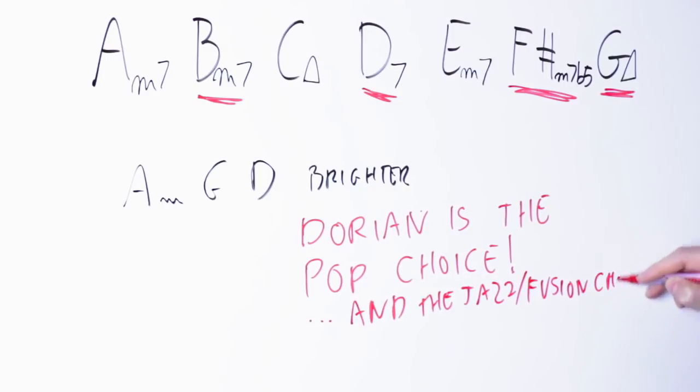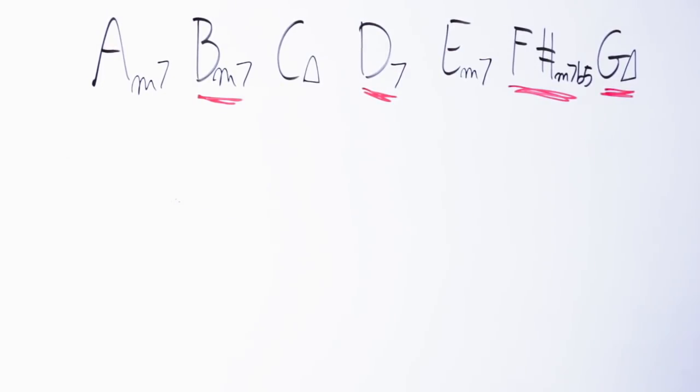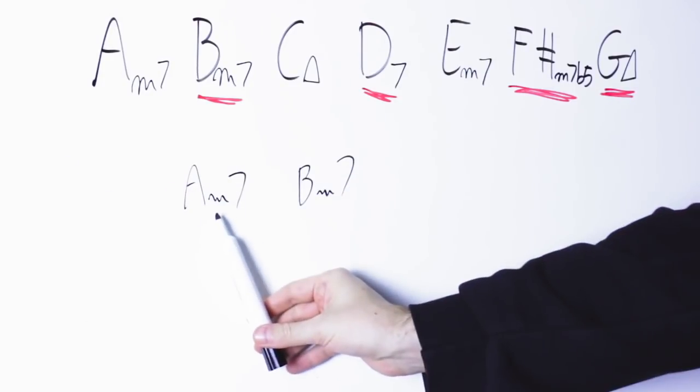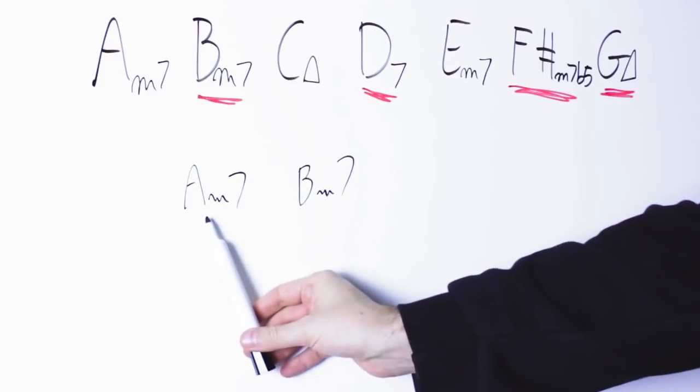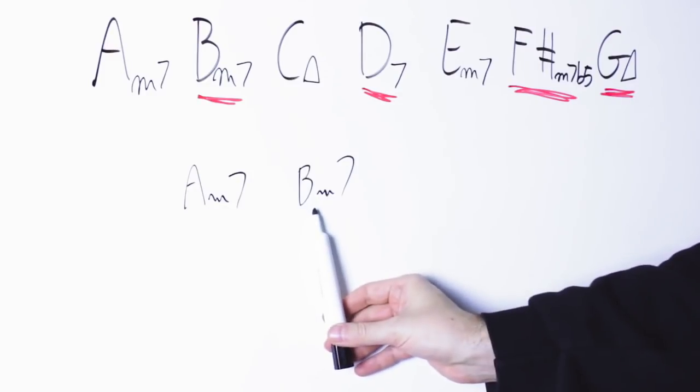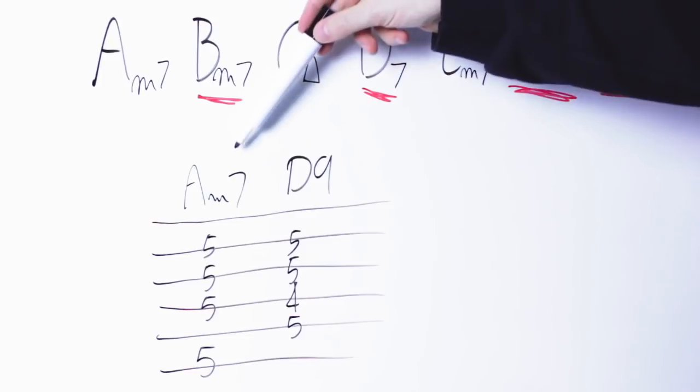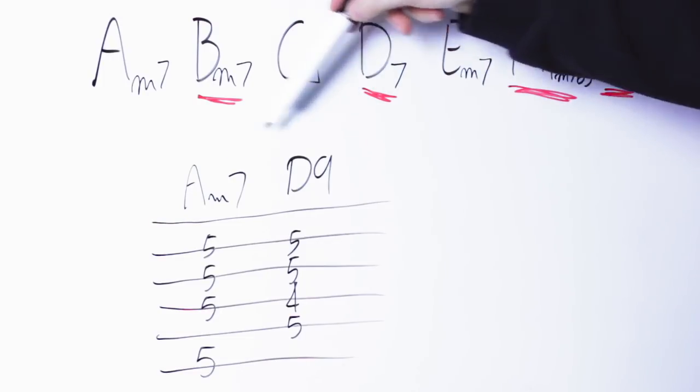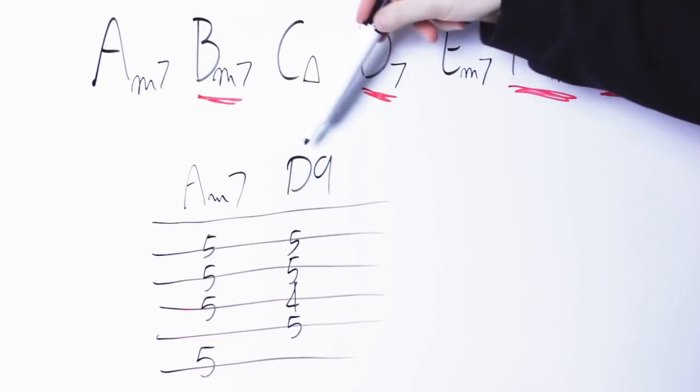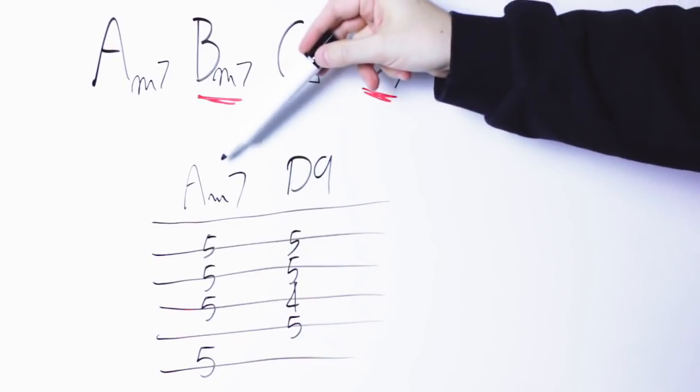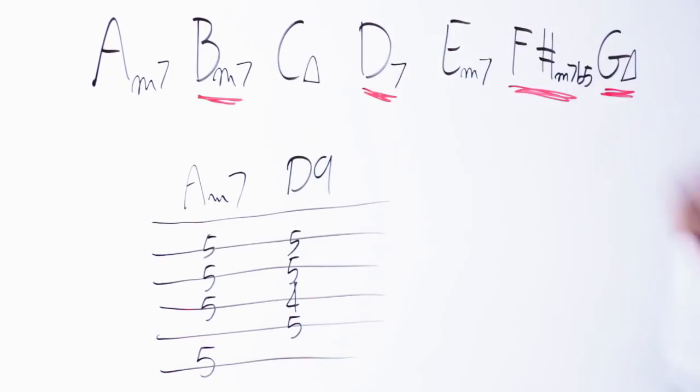But of course Dorian doesn't stop there. Dorian, for instance, is used a lot in jazz and fusion. Typical jazzier chord progressions are those: A minor seventh B minor seventh, and A minor seventh D nine.